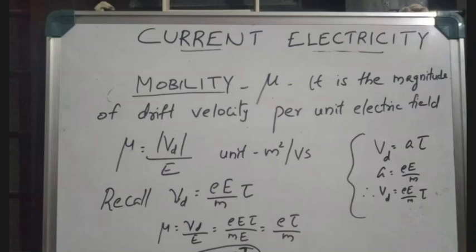Let's look at the equation and definition. Mobility is the magnitude of drift velocity per unit electric field.